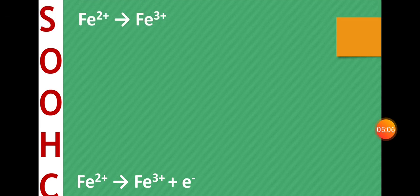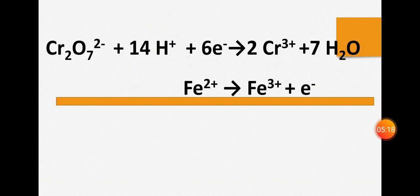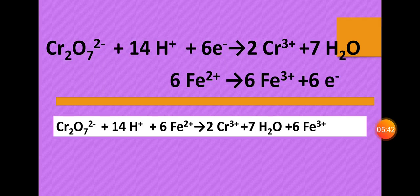This half is set. The two half-reactions are the final equations. Now we have to add them. We need to multiply so the electrons cancel. The first equation and the second equation - we multiply and add.